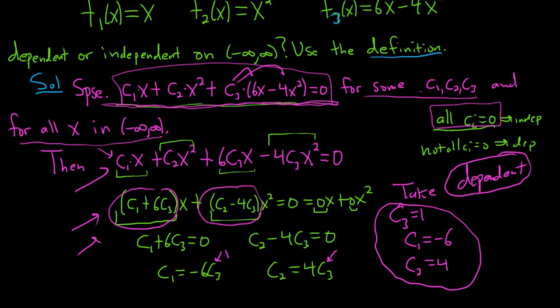So that didn't happen this time. We got two equations. We were able to manipulate them in some way. We solved the first one for c1, solved the second one for c2. And then we were able to pick a number for c3 and get non-zero answers. So that means it's dependent.